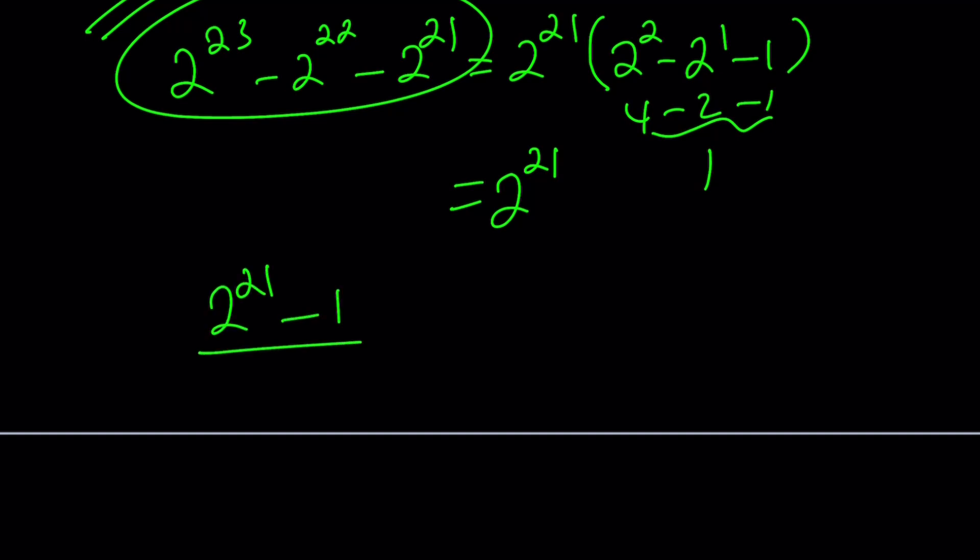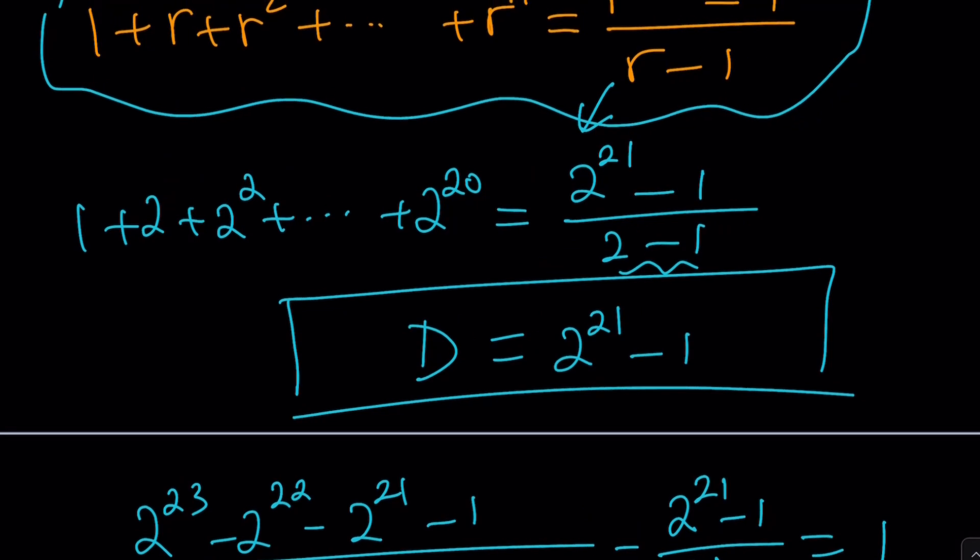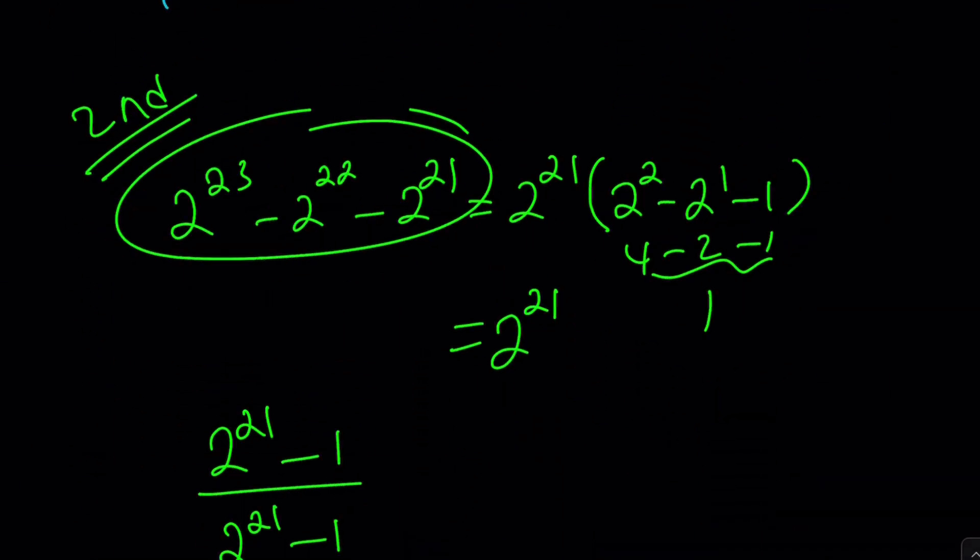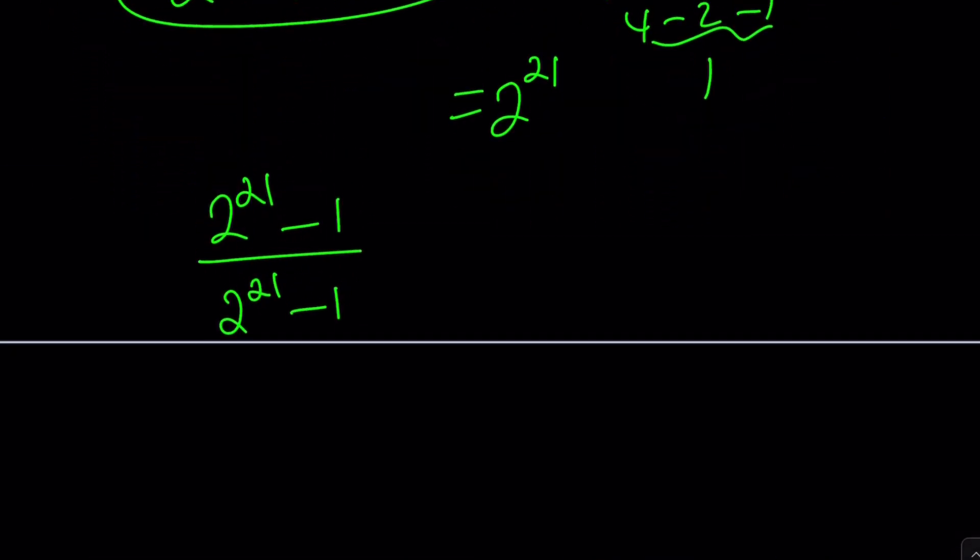So the numerator becomes 2 to the 21 minus 1, and the denominator is going to be 2 to the 21 minus 1 from the geometric series. As you know before, we just calculated it, right? By using this formula, and then we got that. So that should, I mean, I'm kind of cheating, right? Using the first method, but you get the idea.